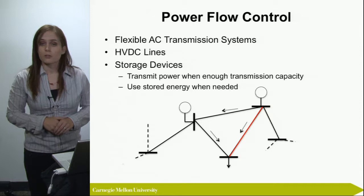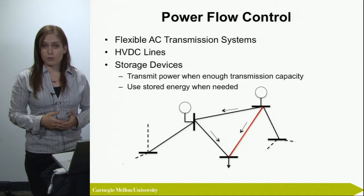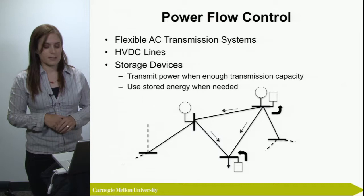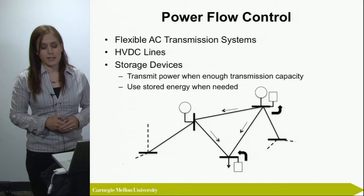Another method of controlling power flow is placing storage devices at different locations in the system. This allows us to transmit power when there's enough transmission capacity and use stored energy when we need it. In our example, if we place storage devices as shown in the graph, we can feed into storage when we don't have enough transmission capacity and draw from the other storage device to supply the load.